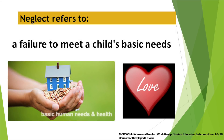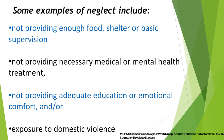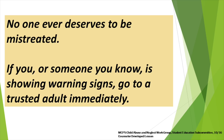Another form of abuse is neglect. Neglect is the failure to meet a child's basic needs. Some examples of neglect are not providing shelter, basic supervision, or enough food. Neglect can also be not providing necessary medical or mental health treatment, not providing adequate educational support or emotional comfort, and/or exposure to domestic violence. It is important to remember that no one ever deserves to be mistreated.